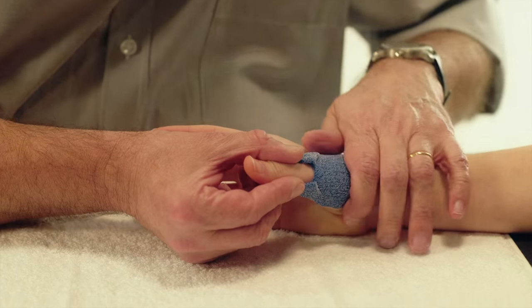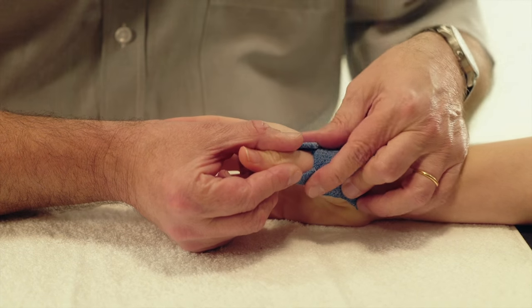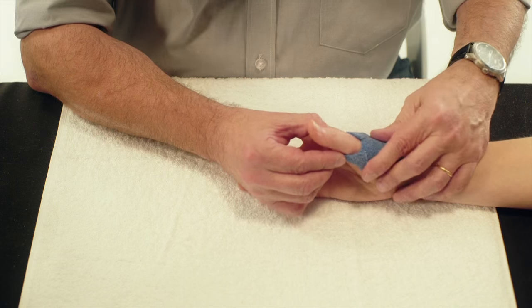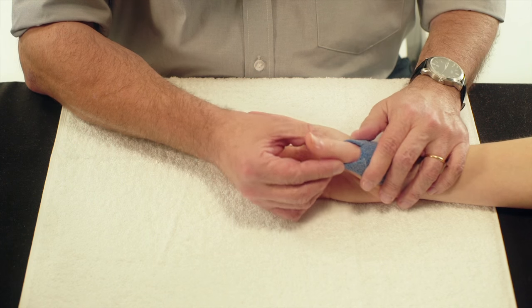Mould the palmar side of the orthosis to the thumb and return the edges towards the dorsal side. Keep the thumb in abduction during the entire cooling time.